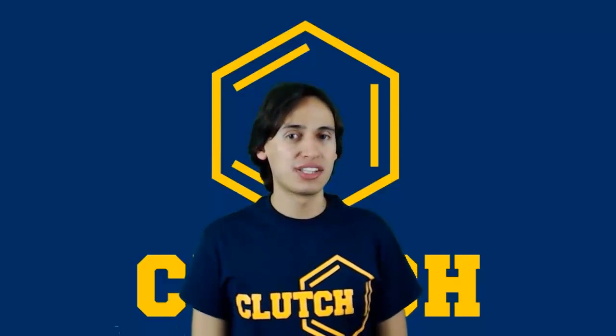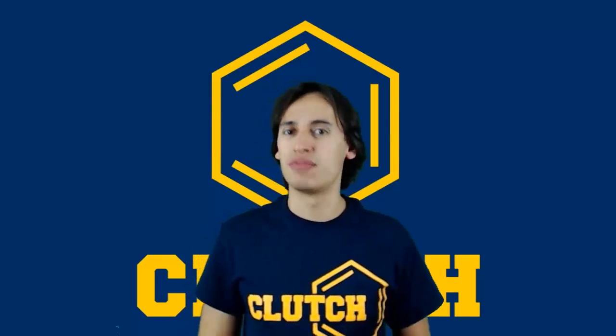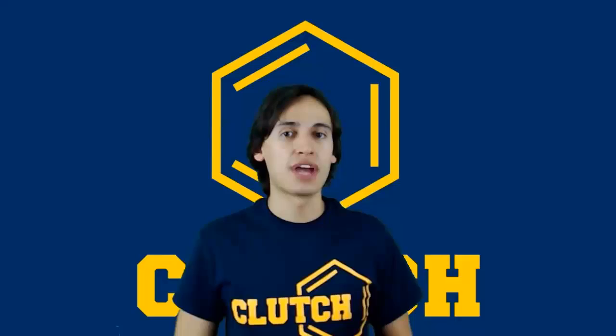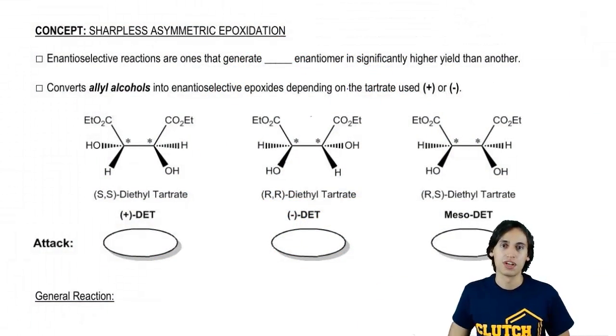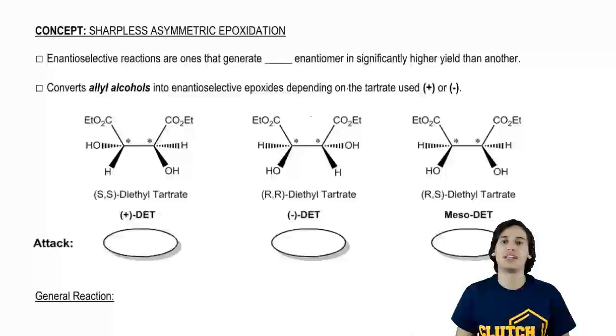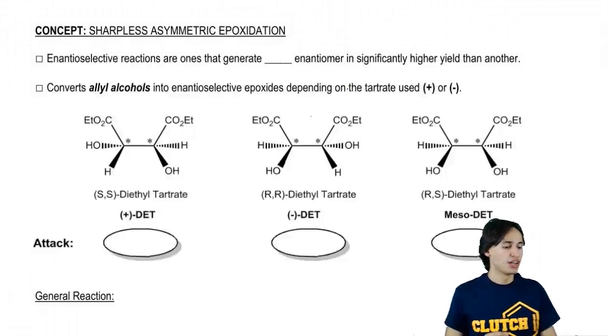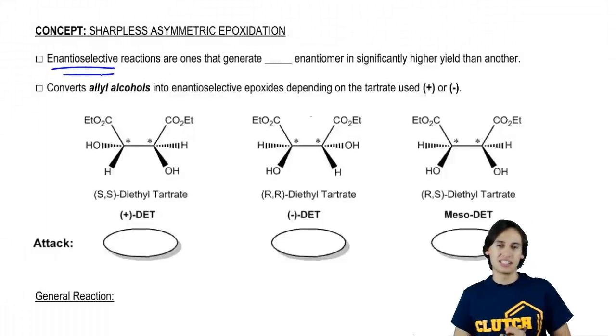Now I want to talk about a form of epoxidation that has some pretty interesting advantages. The name of this reaction is the Sharpless Asymmetric Epoxidation. The whole point of this reaction is that it's a form of epoxidation that is enantioselective.